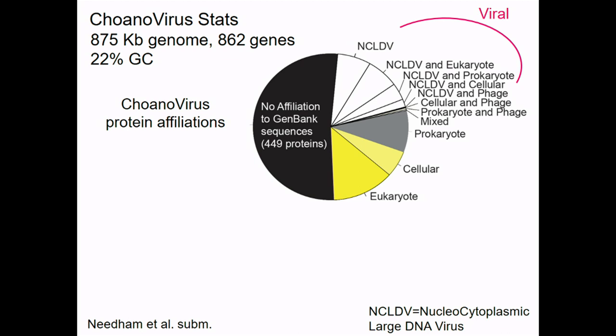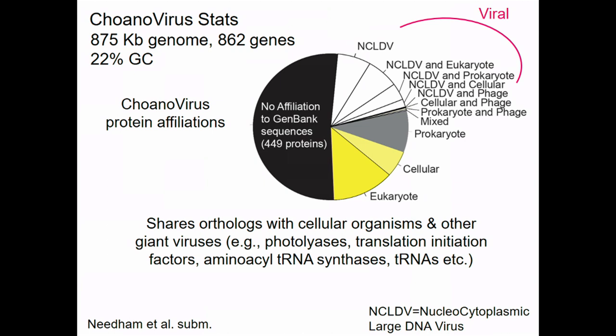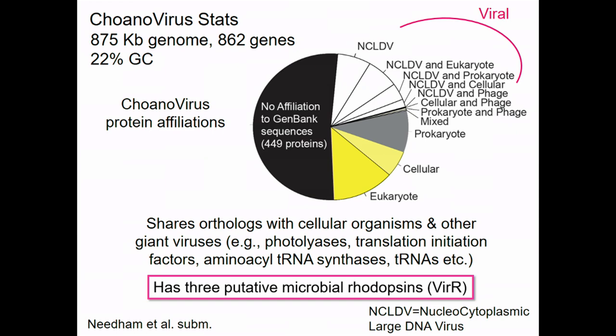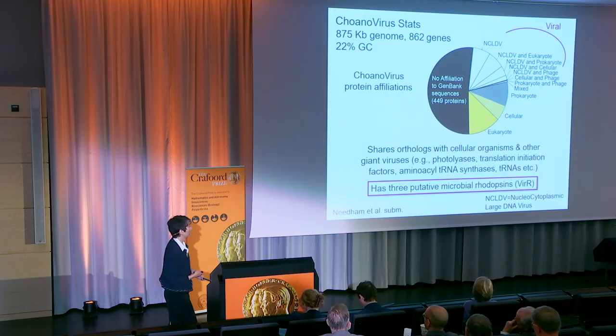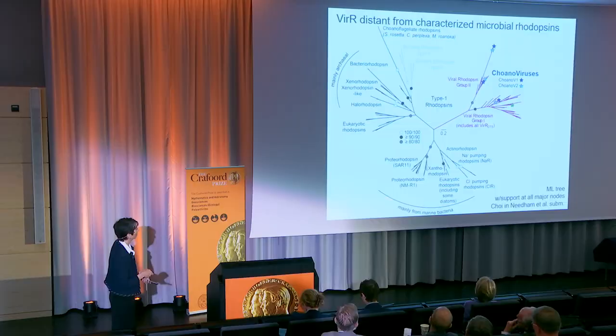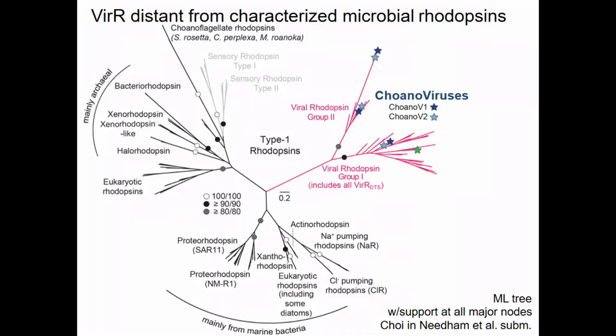Comparing this virus to other databases, there are many unknown proteins we really need to learn the function of, and many that associate with other known viruses. It has genes that many cellular organisms have — genes with functions thought to be unique to cellular life. One of the most interesting things is that it has three putative microbial rhodopsins. Rhodopsins can be ion pumps or proton pumps. In marine bacteria, rhodopsins allow heterotrophic bacteria to augment growth during periods of starvation if you have them in the light — a huge discovery by Ed DeLong and Oded Beja and others. Phylogenetically, these viral rhodopsins are really divergent from marine bacterial ones, raising questions about function.